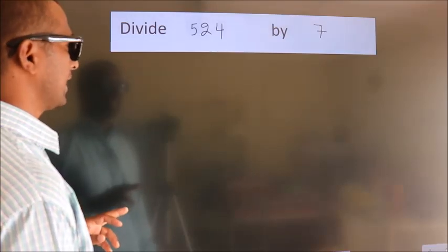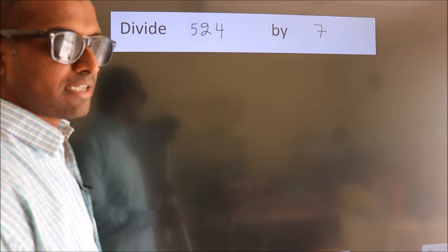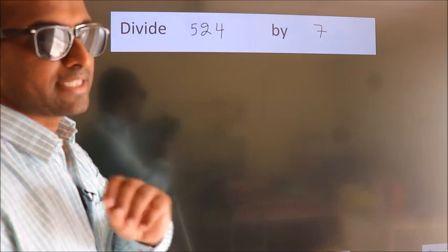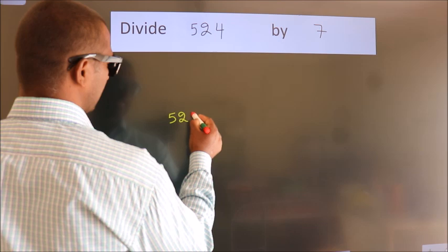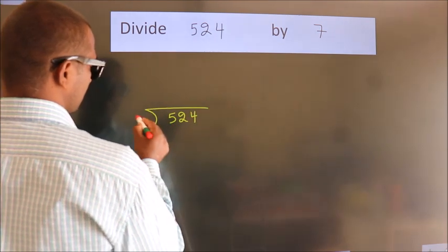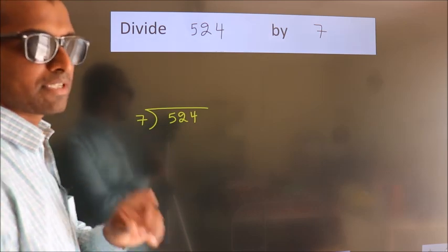Divide 524 by 7. To do this division, we should frame it in this way. 524 here, 7 here. This is your step 1.